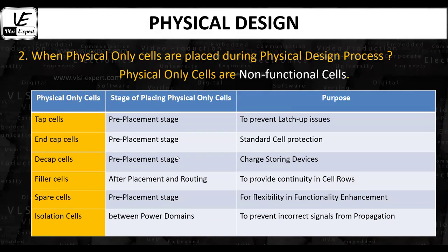The final physical only cell is the isolation cell. Isolation cells are placed at the interface between two power domains — those that can be shut down and those that are always on. The purpose of the isolation cell is to ensure that signals do not propagate incorrectly between the two power domains. These are all the physical only cells that are placed during the physical design process.